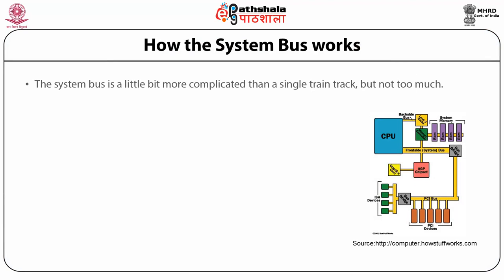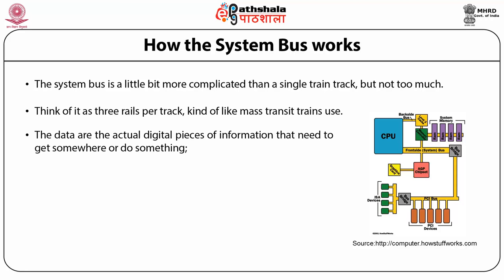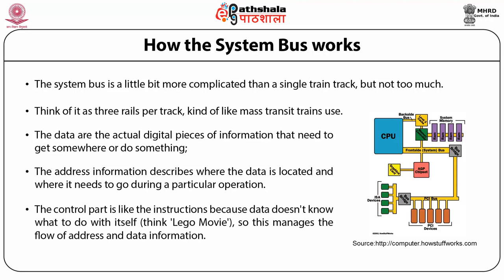The system bus is like three rail tracks — because each track carries three different things: data, address, and control. Data are the actual digital pieces of information that need to get somewhere. Address information describes where data is located and where it needs to go. The control part manages the flow of address and data information, including the direction of transfer and how data needs to be routed through the computer system.